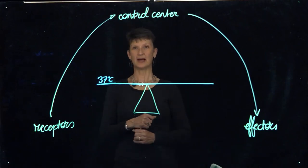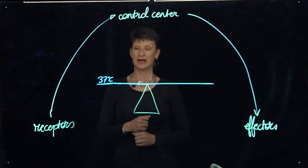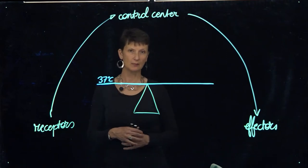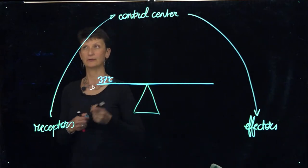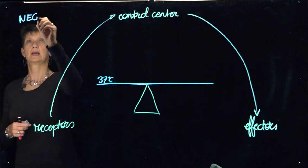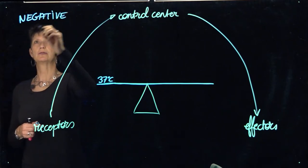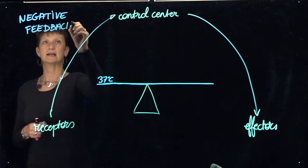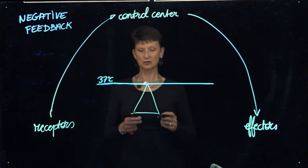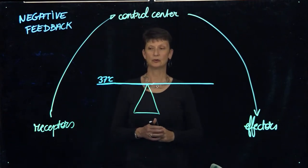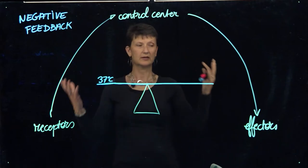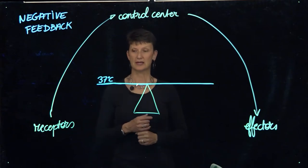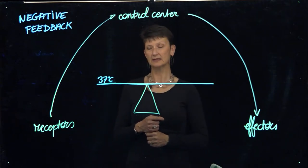Let's take a look at the feedback mechanisms that help keep the body within homeostatic conditions. The most common one in the body is called a negative feedback mechanism. I have redrawn the flowchart illustrated in a previous presentation — a flowchart representing the homeostatic control mechanism — and an example of a homeostatic control mechanism would be a negative feedback mechanism.